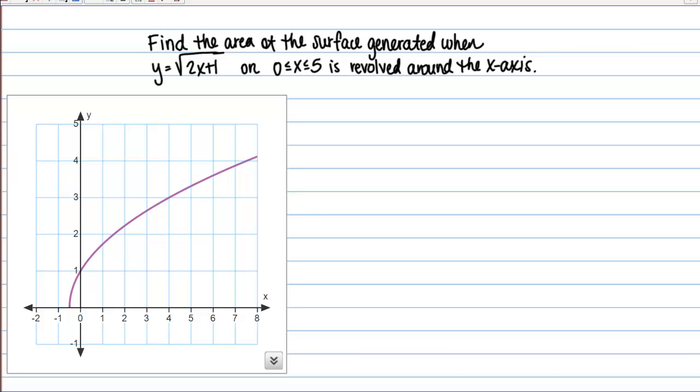So here I've just provided a graph of our function, y equals the square root of 2x plus 1. And what's happening is that we are taking a segment of this curve, and that's the segment between x equals 0 and x equals 5. And we're revolving that curve around the x axis, and when we do that it's going to create a surface.